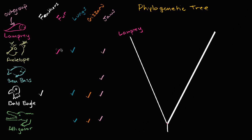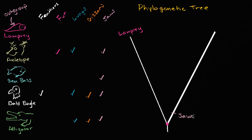The next thing to think about is, well, how did everything else end up branching? What's common about everything else that maybe wasn't common about the lamprey? Well, everything else that we have listed here has jaws. So it's reasonable to say we have this common ancestor between the lamprey and everything else at this branching point, and one of those species must have evolved jaws. Jaws are considered a derived trait — this ancestral species at the root did not have jaws, but at some point they evolved and stuck around because they proved to be favorable in certain environments.